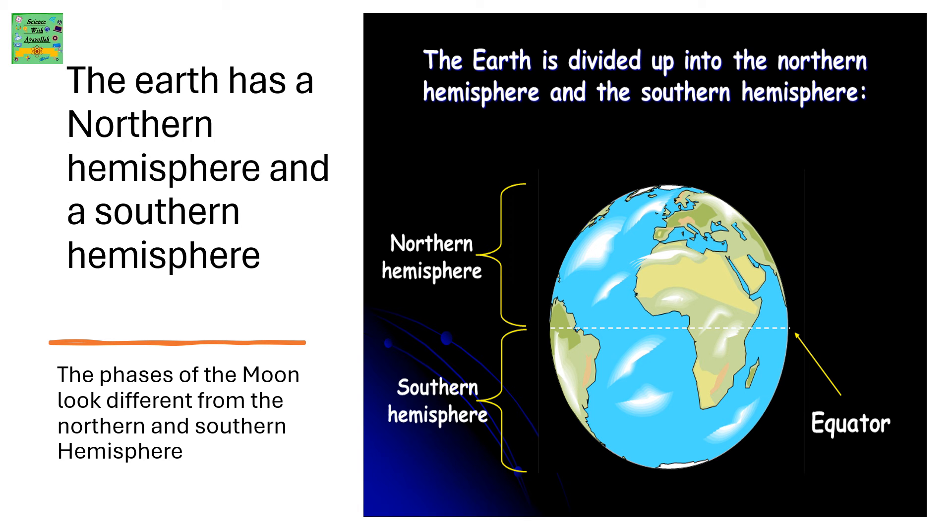The Earth has a Northern Hemisphere and a Southern Hemisphere. The faces of the moon look different from the Northern and Southern Hemisphere. The Earth is divided into the Northern Hemisphere and the Southern Hemisphere. It can be seen in the picture below.